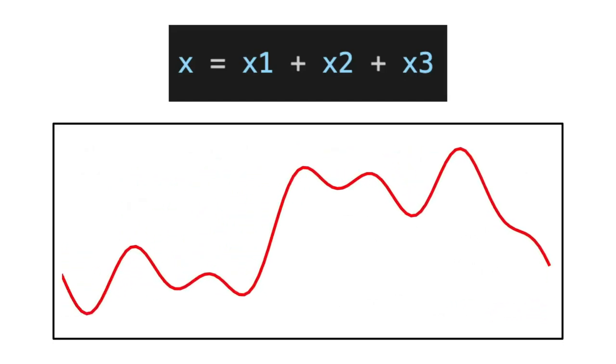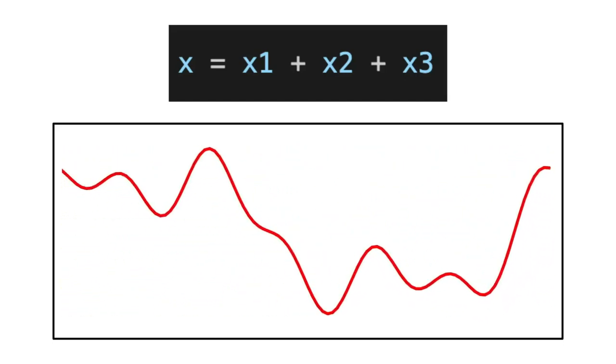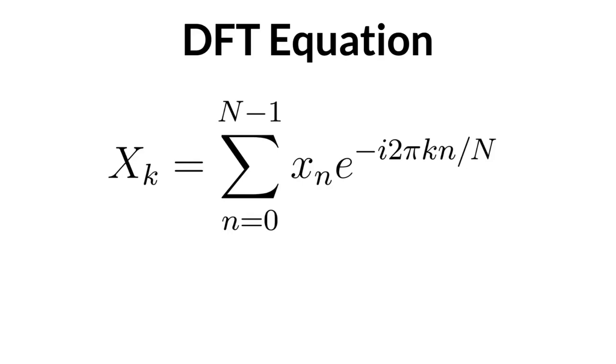We will not add any phase information in this example to keep things simple. All well and good. Now let's try to extract this information using our own implementation of discrete Fourier transform.